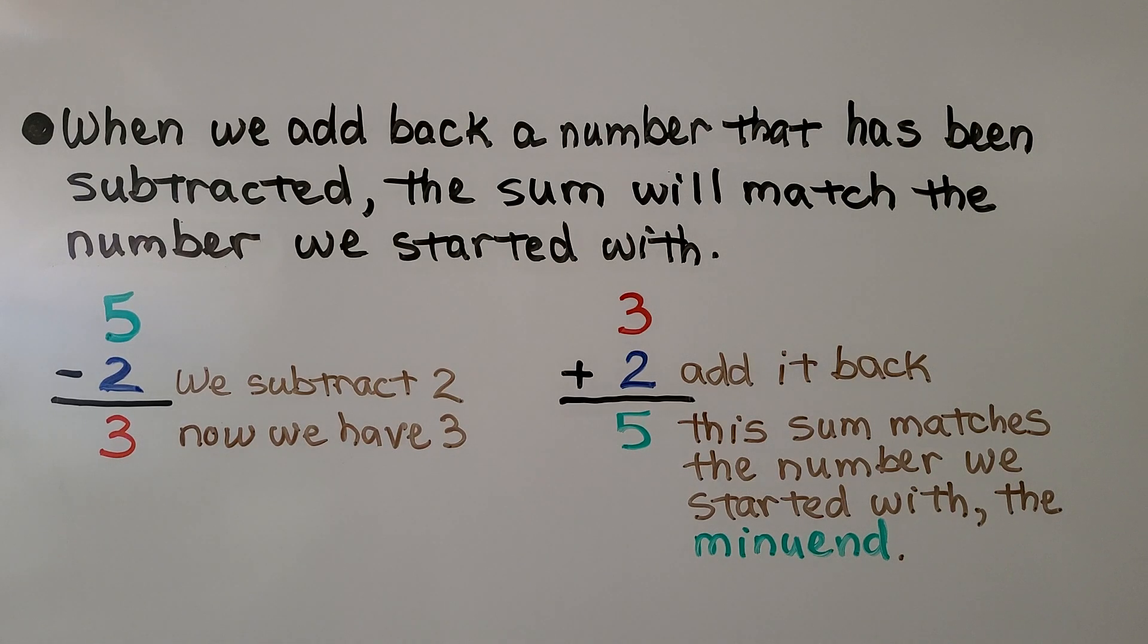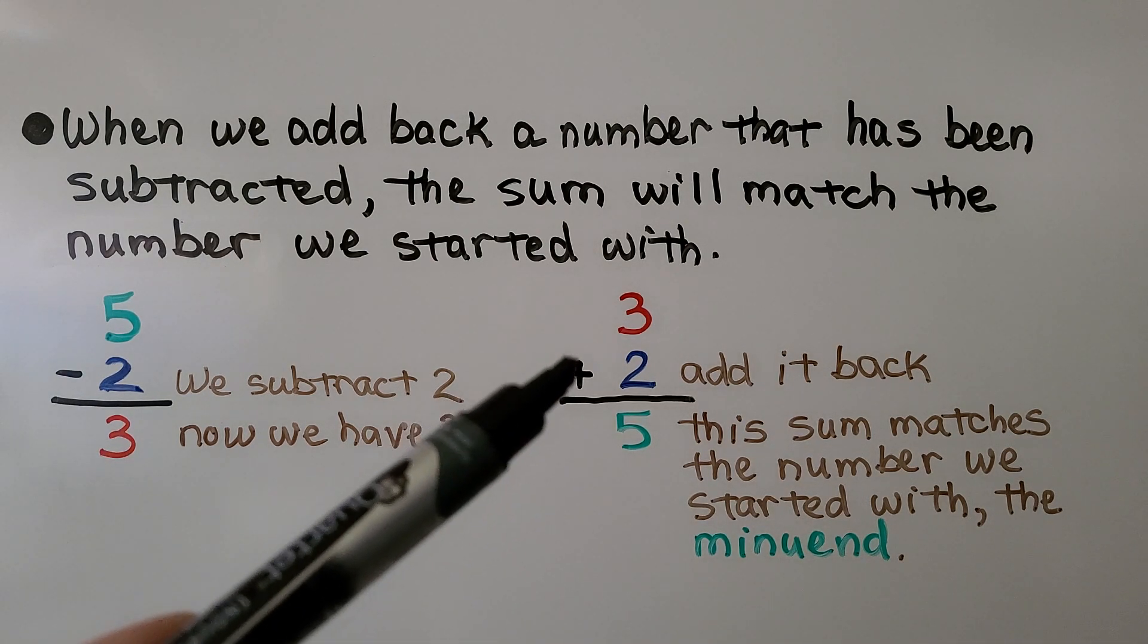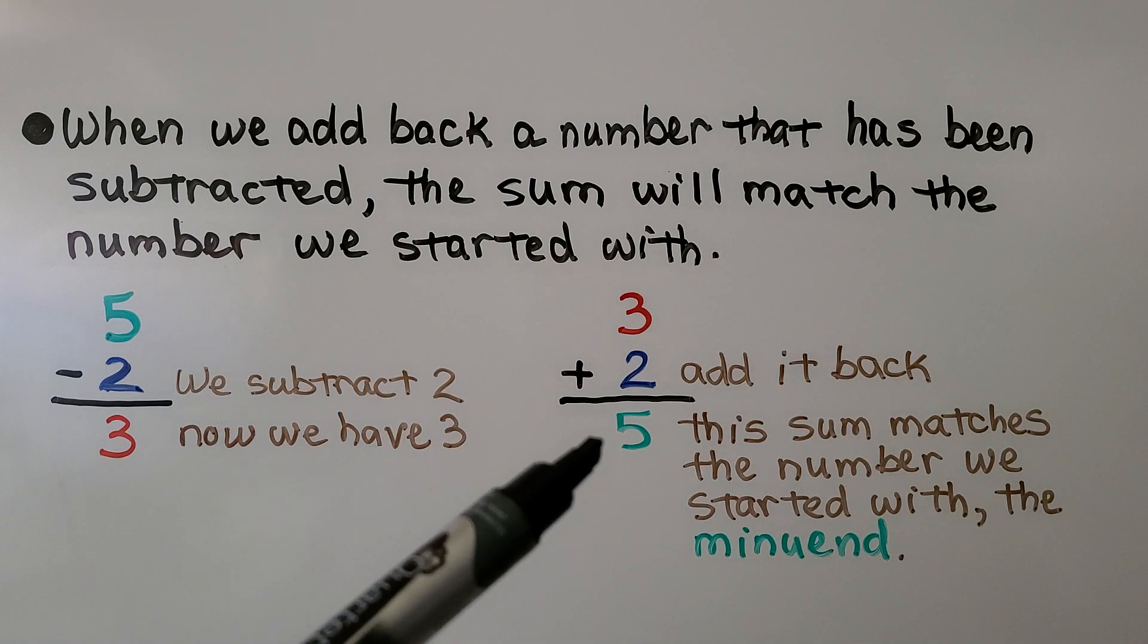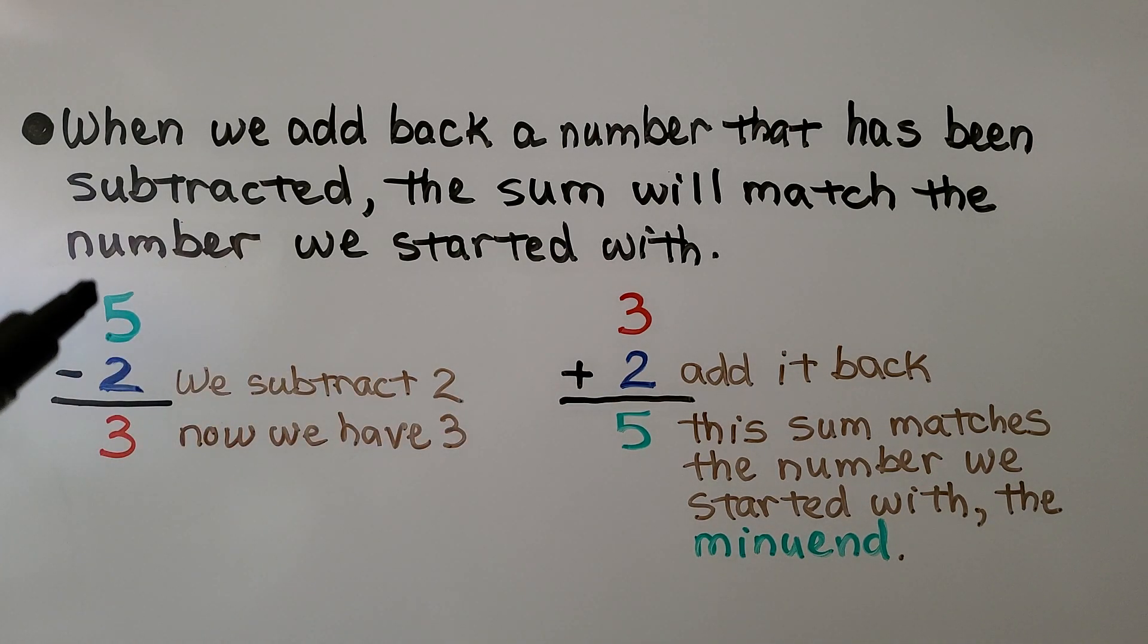When we add back a number that has been subtracted, the sum will match the number we started with. If we have 5 and we subtract 2, now we have 3. And if we take this 3 and add the 2 back, we're going to have 5, and this sum matches the number that we started with, the minuend.